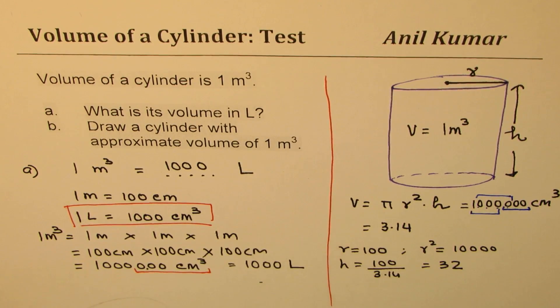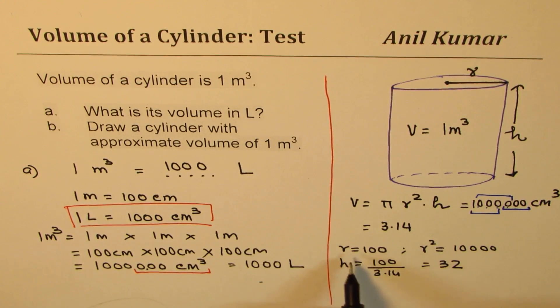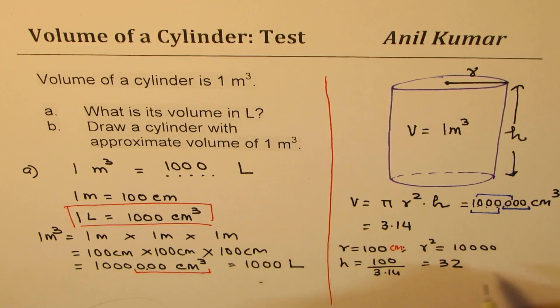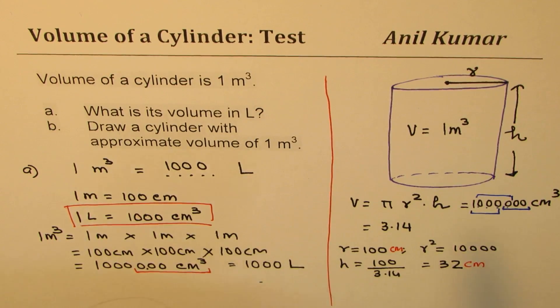So one option I've given you, that is, r is equals to 100 and height is 32. And both the units are in centimeters. So that could be one way.